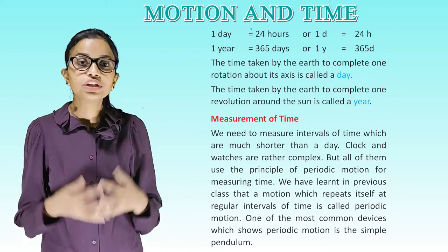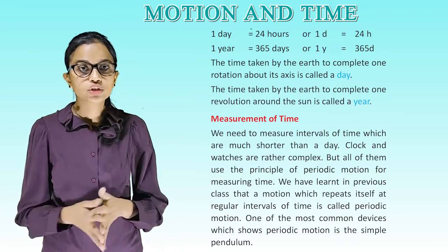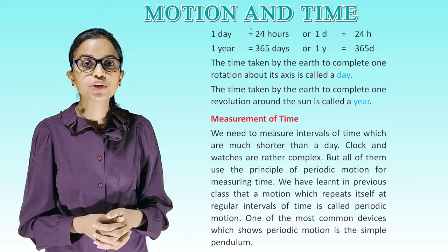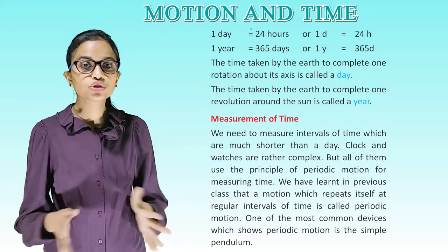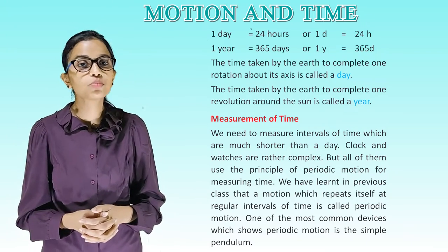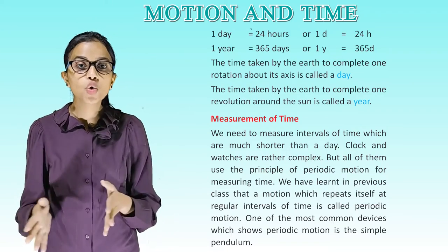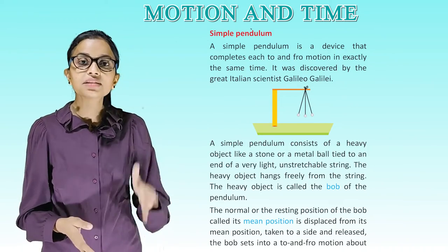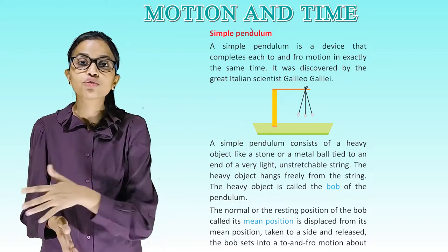Measurement of time. We need to measure intervals of time which are much shorter than a day. Clocks and watches are rather complex but all of them use the principle of periodic motion for measuring time. We have learned in previous class that a motion which repeats itself at regular intervals of time is called periodic motion. One of the most common devices which shows periodic motion is a simple pendulum.